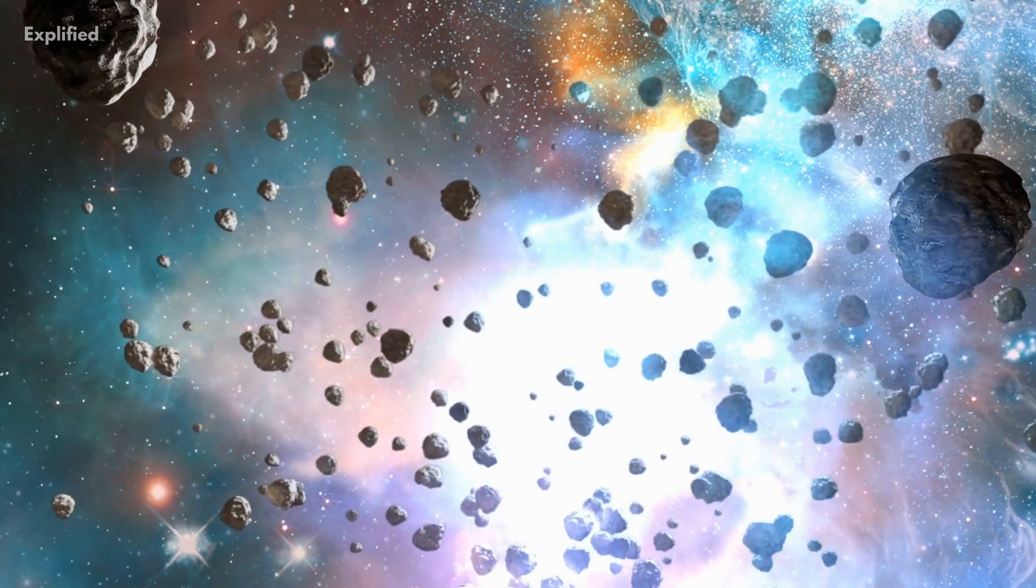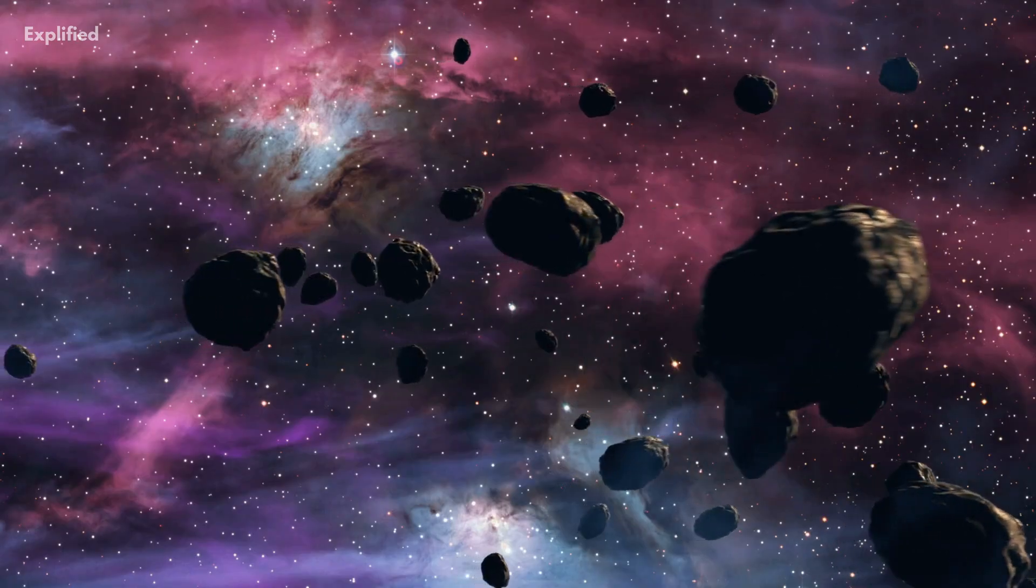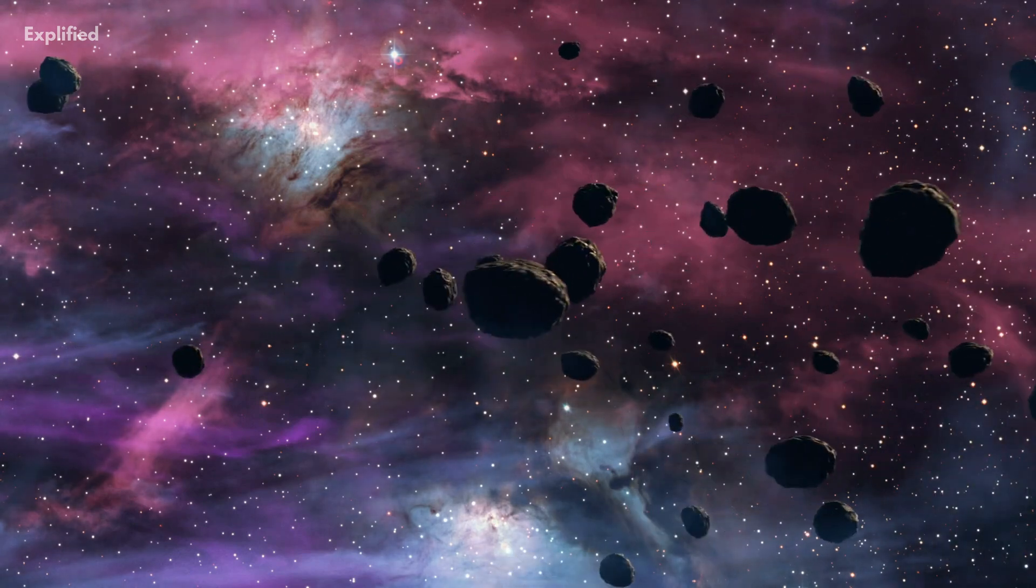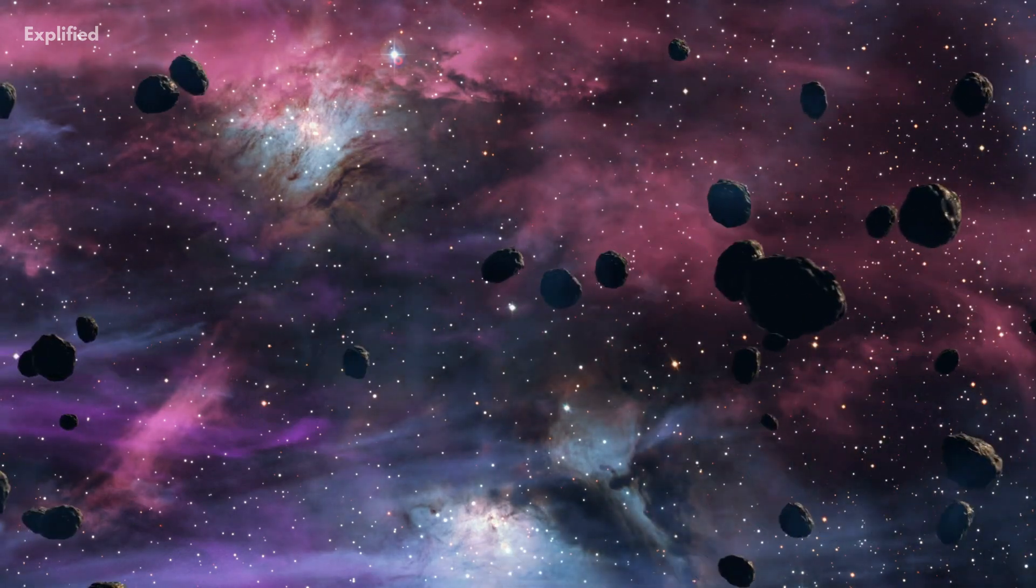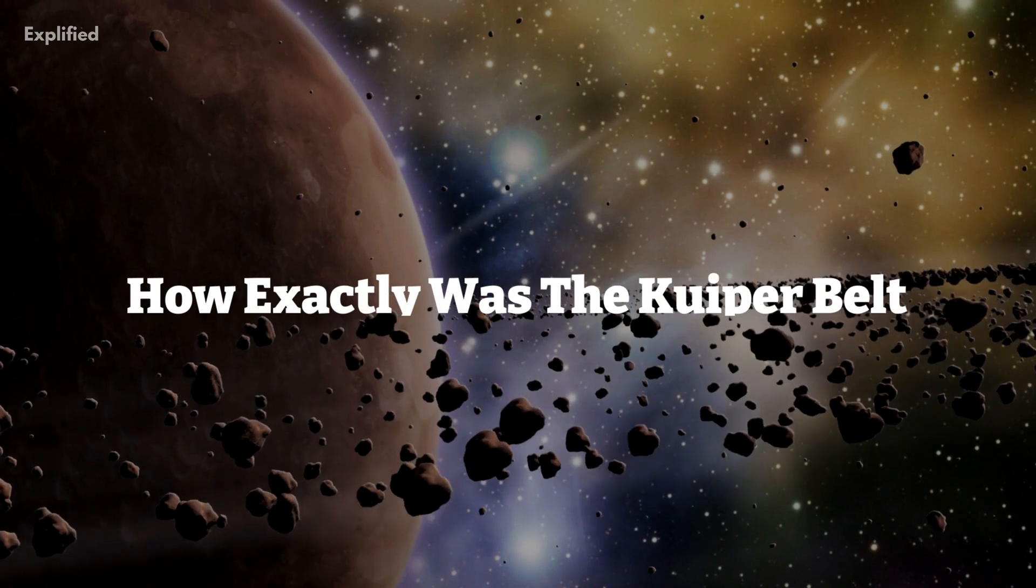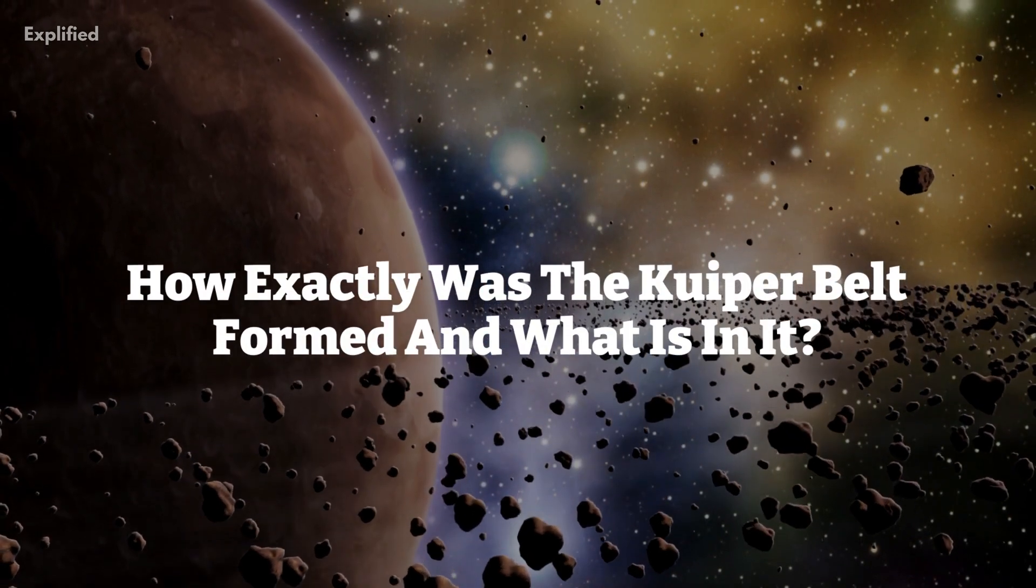The Kuiper Belt is often confused with the Oort Cloud, which is a much more distant region that consists of icy bodies and comets. So how exactly was the Kuiper Belt formed and what is in it?